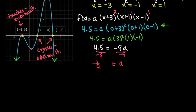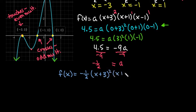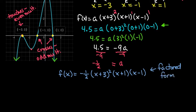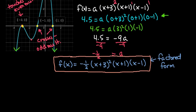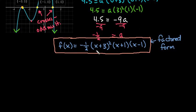So our equation in factored form is f(x) equals negative one half times (x plus 3) squared times (x plus 1) times (x minus 1). This is a completely accepted way to write a polynomial equation. However, sometimes you are required to convert to standard form, so I'll show you how to do that. The factored form gives us all our zeros and confirms our 'a' term is negative one half.